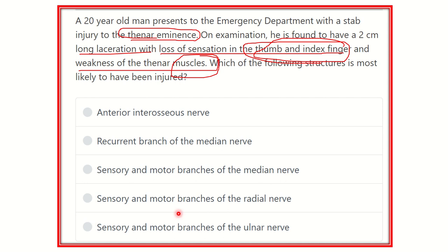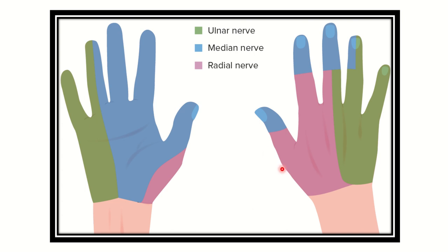...sensory and motor branches of the radial nerve, and sensory and motor branches of the ulnar nerve. First, we can see the nerve supply or cutaneous innervation of the hand. In the case of the ulnar nerve, it supplies the fifth finger, the medial part of the fourth finger, and the hypothenar area.